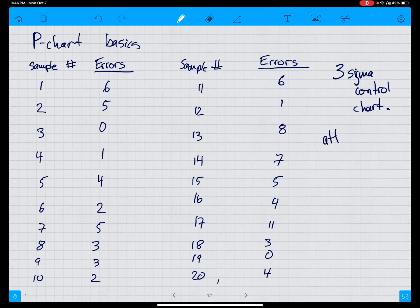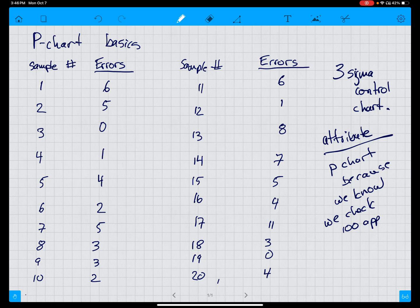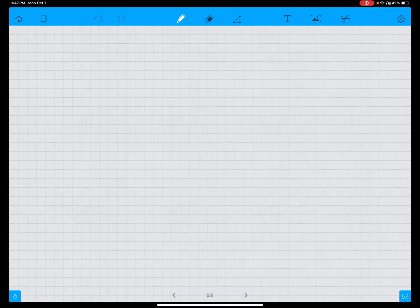This is an attribute and we would do a p-chart because we know that we checked a hundred applications, and this is the proportion of applications that have errors in them. We do it 20 times, 20 different clerks, but we look at a hundred, so we know that n is equal to a hundred. And we can do a p-chart.